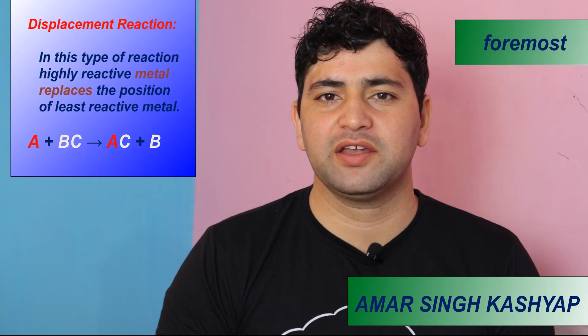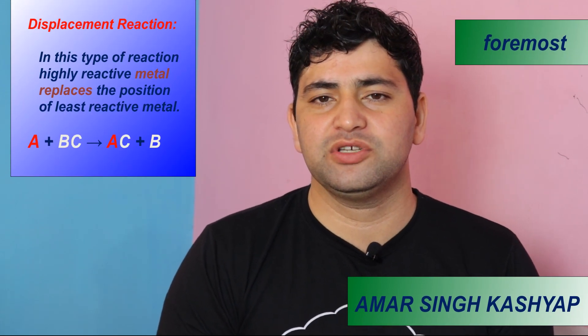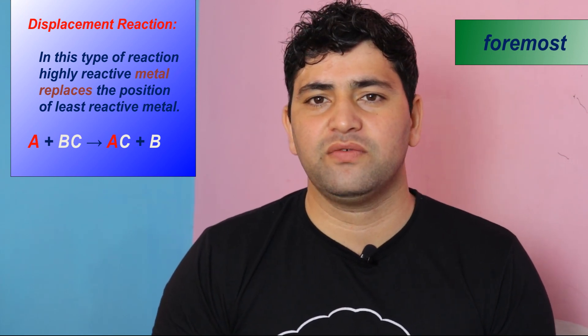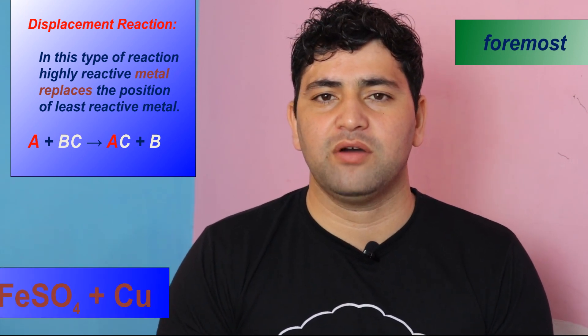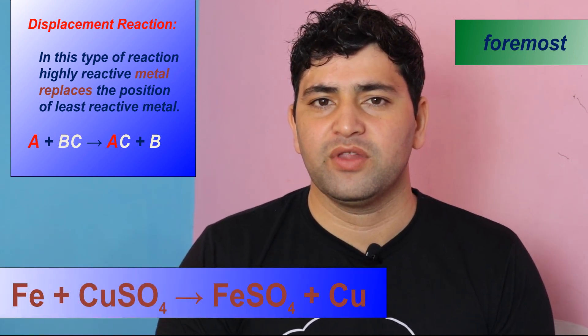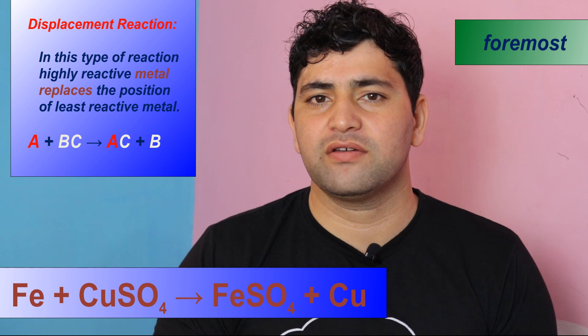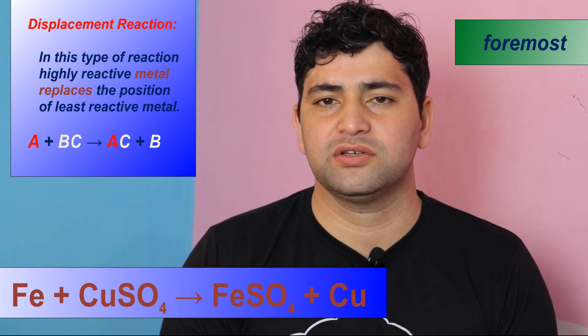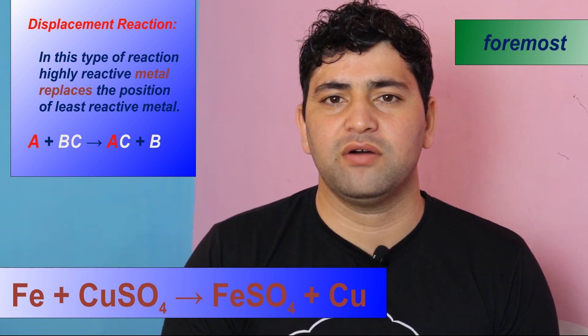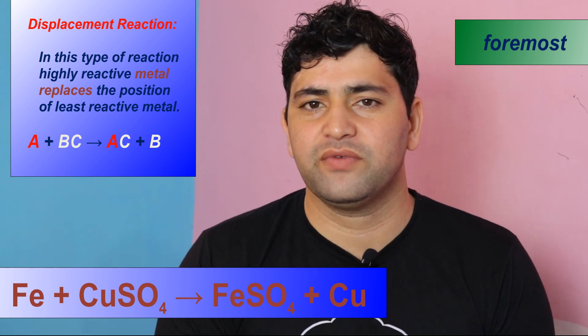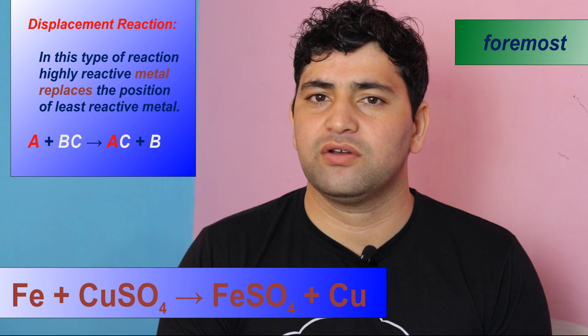Displacement reaction. In this type of reaction, a highly reactive metal replaces the position of a less reactive metal. For example, the reaction of iron with copper sulfate. When iron reacts with copper sulfate solution, it forms iron sulfate and copper.